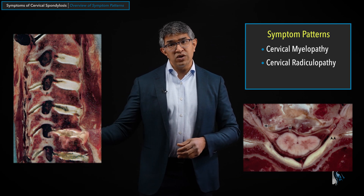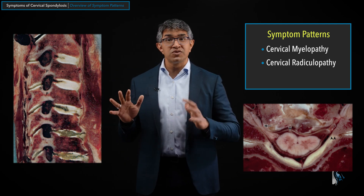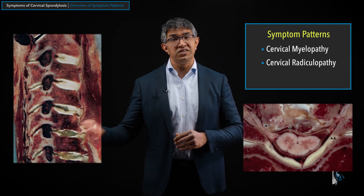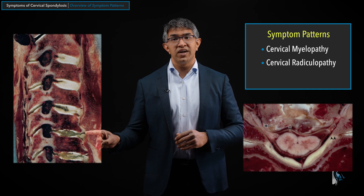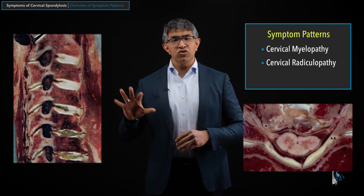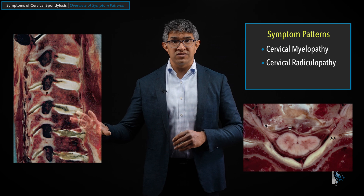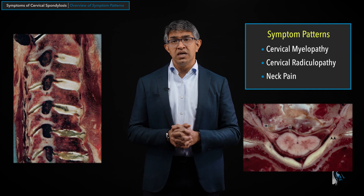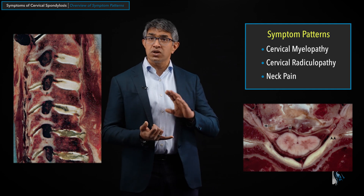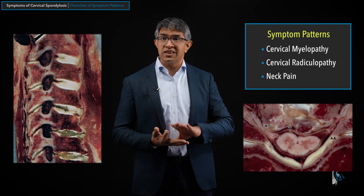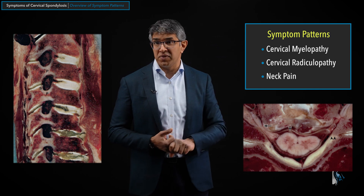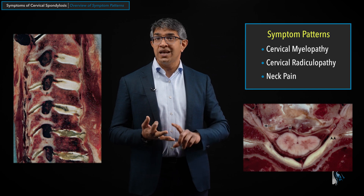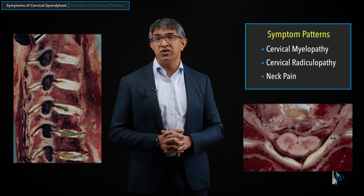This sequence — almost sagittal — shows the arthritis more clearly: some levels have beautiful-looking discs while others are quite degenerated. You can also see arthritis involving the joints in the back. Of course, those structural findings involving the spinal column can cause neck pain. So the last category to discuss will be neck pain. The symptoms really fall into three categories: cervical myelopathy, cervical radiculopathy, and neck pain — and we'll get into those in greater detail now.